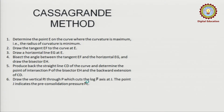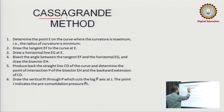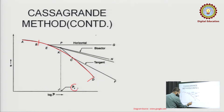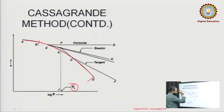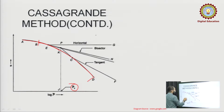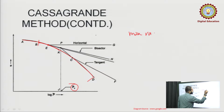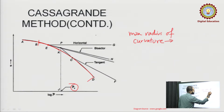Now, what is the Casagrande method and why is it used? The Casagrande method is used to find out the pre-consolidation pressure — that is the main motive. What we will do: the curvature has increased from B to D, so we will find the point of maximum curvature. In this case, point E has the maximum curvature, meaning the maximum radius of curvature.